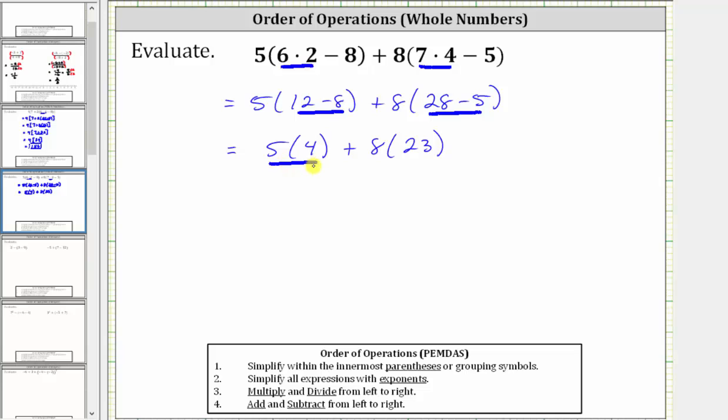We need to determine five times four, which is 20, as well as eight times 23, which is equal to 184. And therefore the expression simplifies to 20 plus 184. And then of course the last step was to determine the sum, 20 plus 184 equals 204. The given expression simplifies to 204.